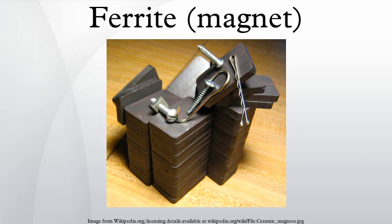Ferrites are usually non-conductive ferromagnetic ceramic compounds derived from iron oxides such as hematite or magnetite, as well as oxides of other metals. Ferrites are, like most other ceramics, hard and brittle. Many ferrites are spinels with the formula AB₂O₄, where A and B represent various metal cations, usually including iron (Fe).